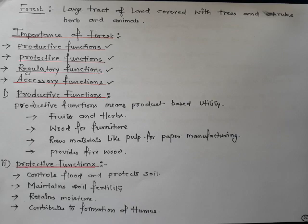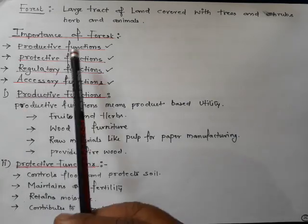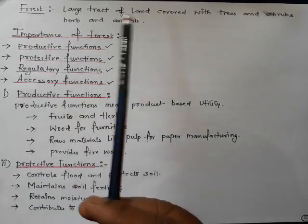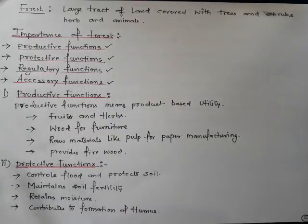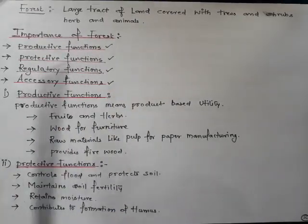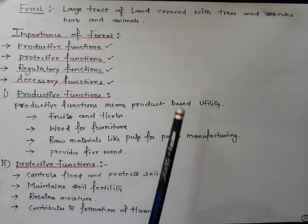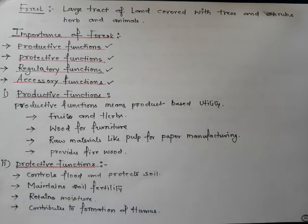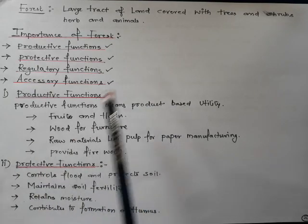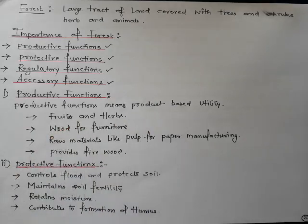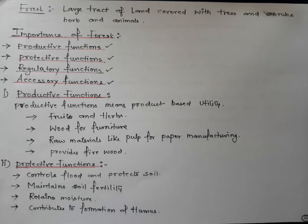Before discussing the different types of forest, let's see why forests are important. Forests have many uses and are categorized into productive functions, protective functions, and regulatory functions. Productive functions mean product-based uses — forests give us fruits and herbs, wood for furniture, raw materials like pulp for paper manufacturing, and firewood.